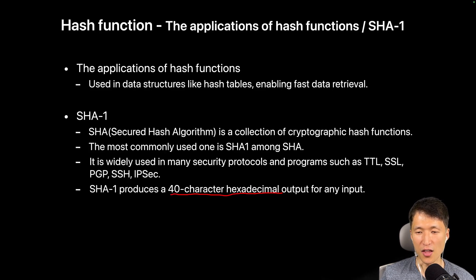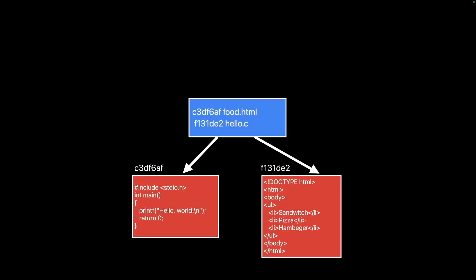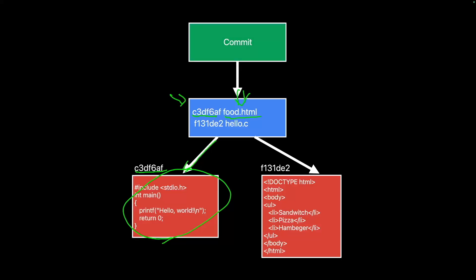All the hashes you see in Git are generated using SHA-1. Returning to the snapshot model: when the first version is created, objects are generated to store the content of the files, and these objects have hashes that allow access to them. Subsequently, another object is created containing the hash and file name, allowing access to the file content. Finally, another object — called a commit — is created to access that object. In Git, the objects represented in red, blue, and green are referred to as blobs, trees, and commits, respectively.